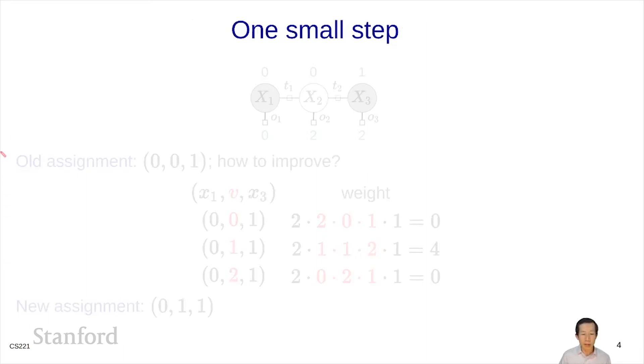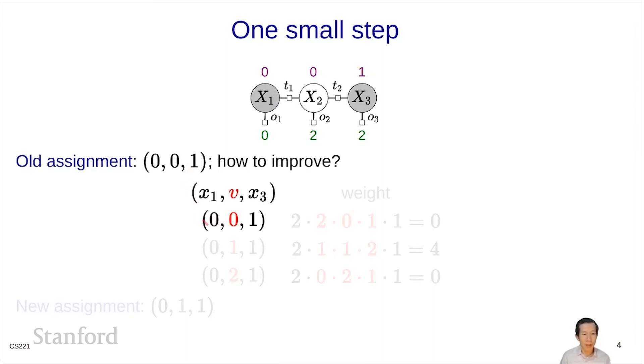Let's jump in and suppose we have a complete assignment 0, 0, 1. The question is how do we improve this? Let's look at the weight of this assignment. The weight is 2 because 0 agrees with 0, times 2 because 0 agrees with 0, times 0 because these two are too far apart, times 1 because these two are too far apart. But you get a 0. So that's not a very good assignment.